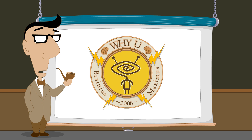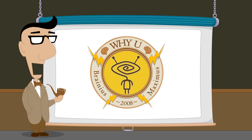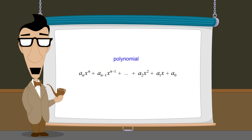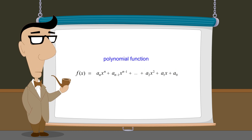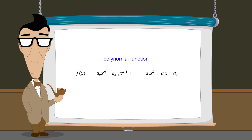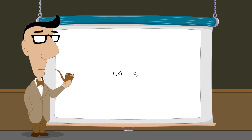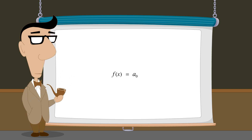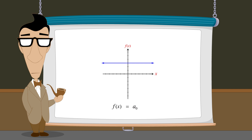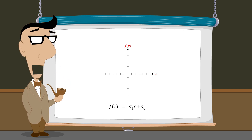In the previous lecture, we introduced a class of mathematical expressions called polynomials. Polynomial expressions can define polynomial functions, including the functions we have studied so far. These include zero-degree polynomial functions known as constant functions, whose graphs are horizontal lines, and first-degree polynomial functions known as linear functions, whose graphs are sloped lines.